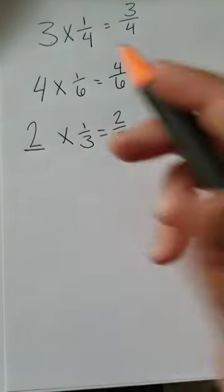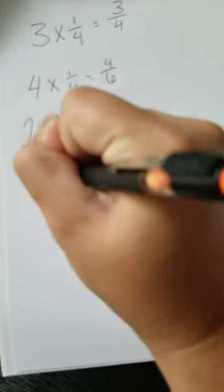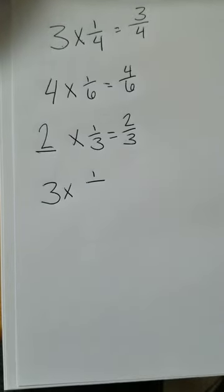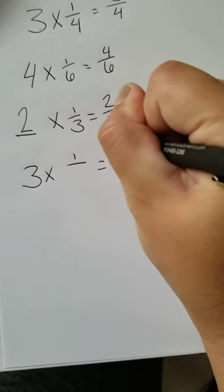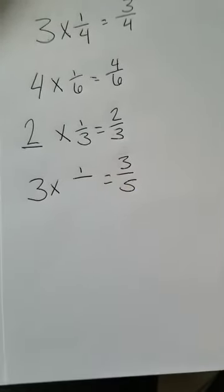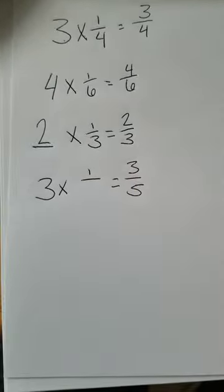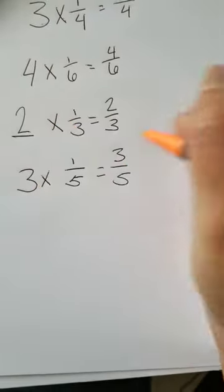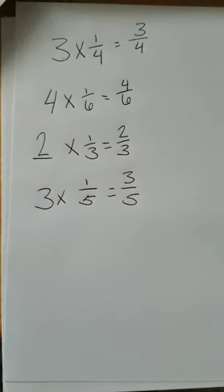Last one. Again, they might try to trick you with some of these. Let's do 3 groups of 1 over, I don't know, we might have to find the denominator, equals 3 fifths. So I need to figure out 3 groups of what is equal to 3 fifths. Well, guess what? The denominator does not change. It's still going to be fifths.